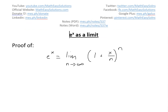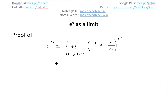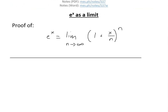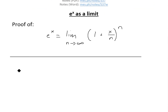In an earlier video I went over e as a limit — that is e to the 1 — and you can see that in the video link below. To prove this, we first start with the inverse of this, which is the logarithmic function, or the natural logarithmic function.